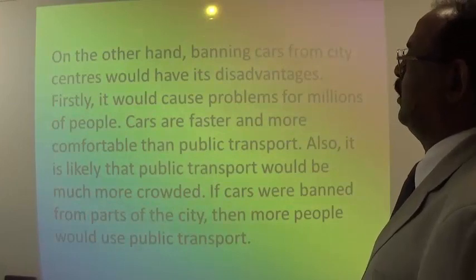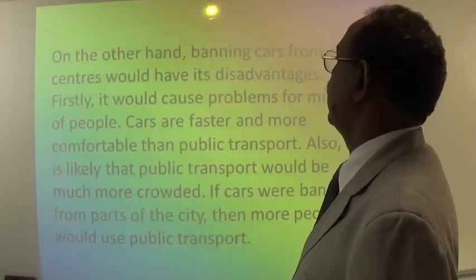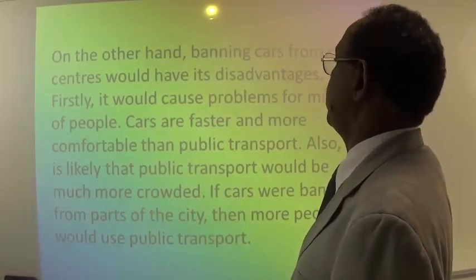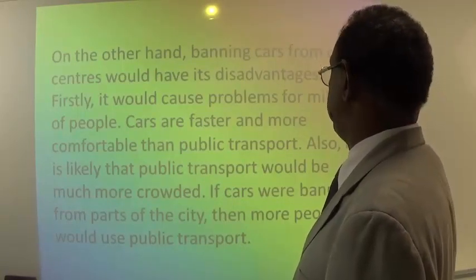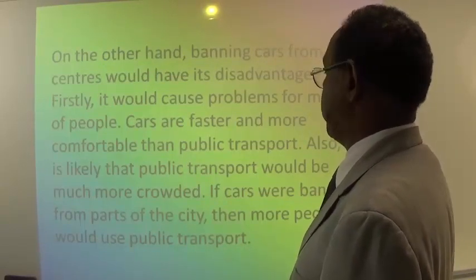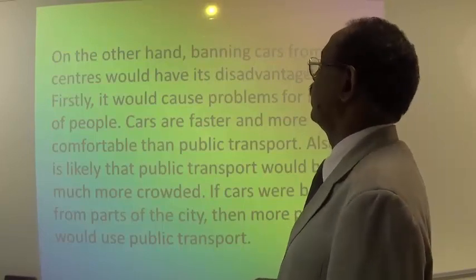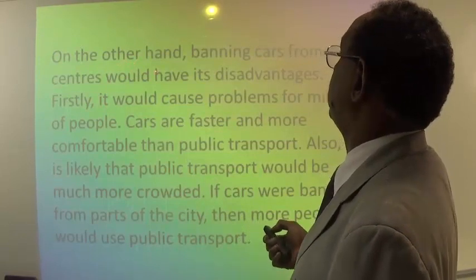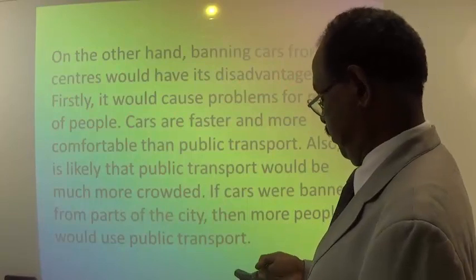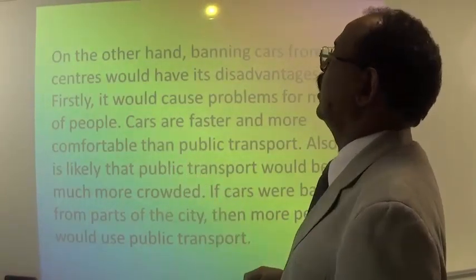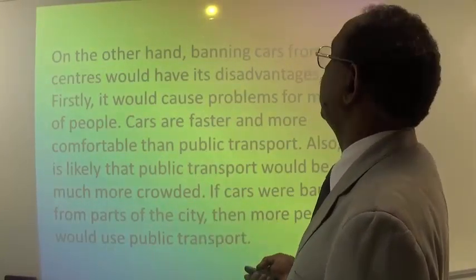'On the other hand, banning cars from city centers would have its disadvantages. Firstly, it would cause problems for millions of people. Cars are faster and more comfortable than public transport. Also, it is likely that public transport would be much more crowded if cars were banned from parts of the city, then more people would use public transport.' Here the writer mentioned the disadvantages. So we start with the introduction, then the main body with two paragraphs — one for advantages and the other for disadvantages.